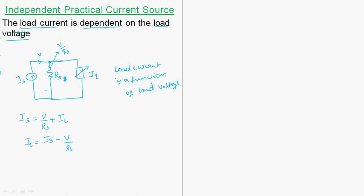This is the case for a practical source. If you draw the VI characteristics, in the ideal case the current is constant. But in the practical case, the current IS decreases with increase in voltage.